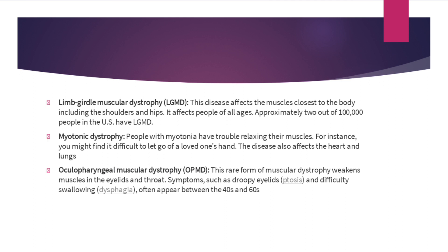Limb-girdle muscular dystrophy affects the muscles closest to the body, including the shoulders and hips, and can affect people of all ages. Myotonic dystrophy causes people to have trouble relaxing their muscles — for instance, you might find it difficult to let go of someone's hand. It also affects the heart and lungs. Oculopharyngeal muscular dystrophy is a rare form that weakens the muscles in the eyelid and throat. Symptoms such as droopy eyelids and difficulty swallowing often appear between the 40s and 60s.